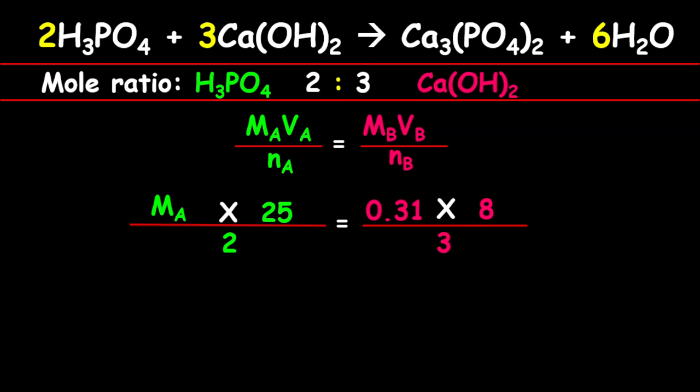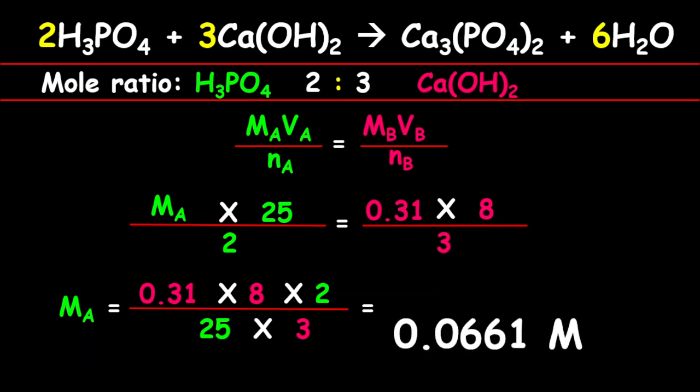Now let us make MA, which is the molarity of the acid, the subject of the formula. So therefore it equals 0.31 multiplied by 8 multiplied by 2, divided by 25 multiplied by 3. Therefore, the molarity of the acid is 0.0661 M.